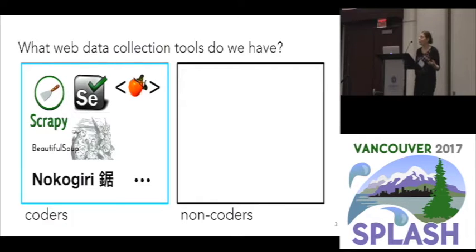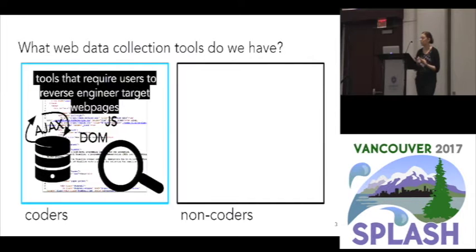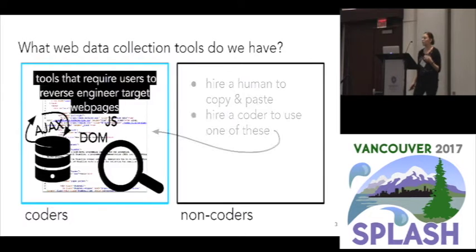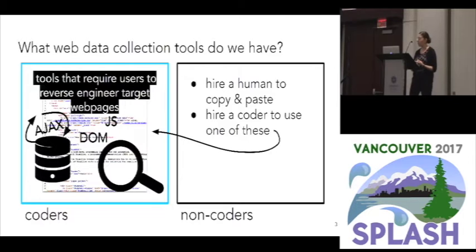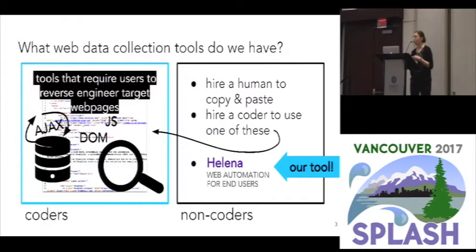There are a ton of tools available for coders — all the familiar scraping languages and libraries that you already know. The unifying thing is that in order to use them you actually have to know how to reverse-engineer web pages: the structure of the DOM, the structure of the JavaScript code, how it's interacting with the server. That's not a reasonable thing to expect of non-coders. So for non-coders your options are essentially hire a human to sit in front of the browser and copy-paste, hire a coder, or more recently use our tool Helena, which allows you to use programming by demonstration to build large and complex scraping scripts.